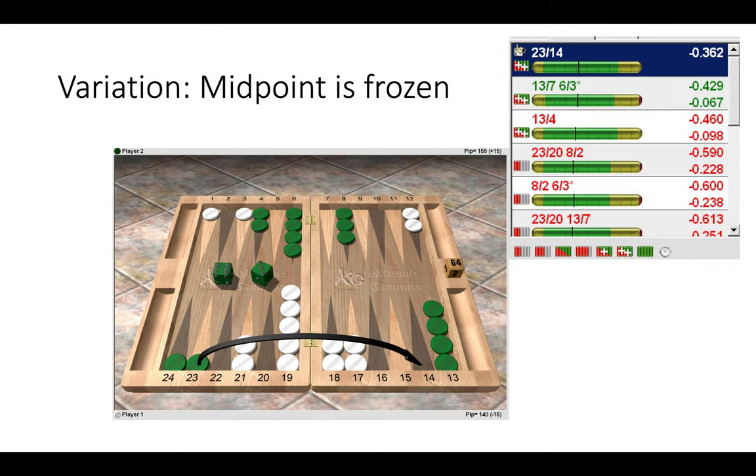And finally, this is a variation on the concept of freezing checkers. So when you see that your opponent has two checkers on the midpoint, then it's a good idea to jump out in front of it, because effectively, by green playing 6-3 into the outfield, he is freezing white checkers on the midpoint.